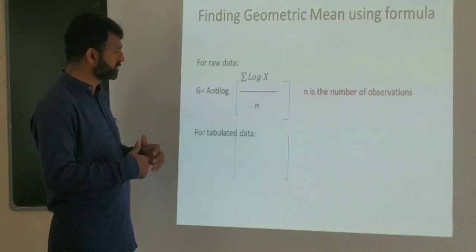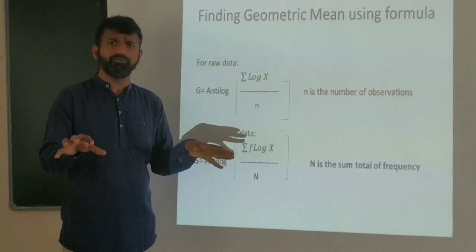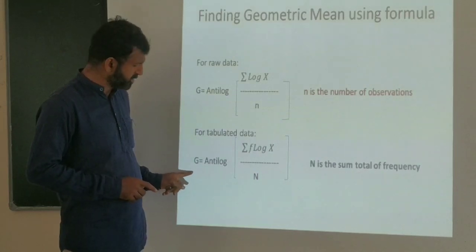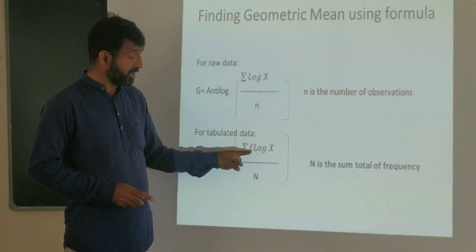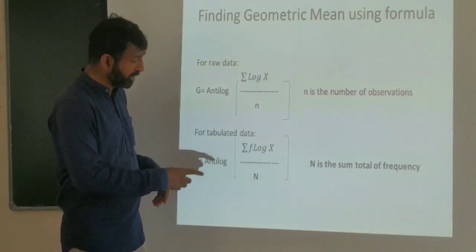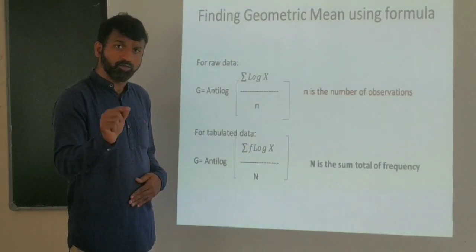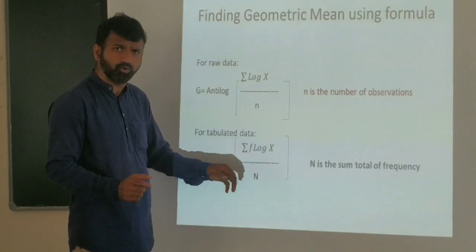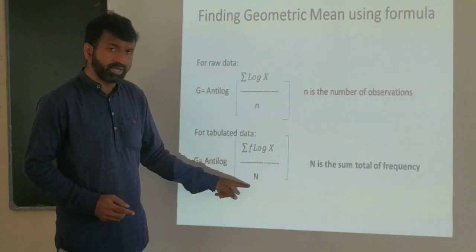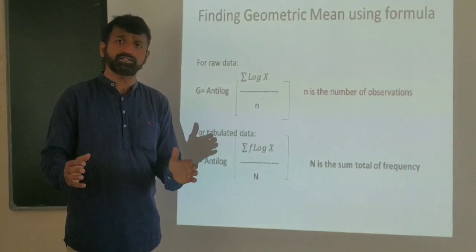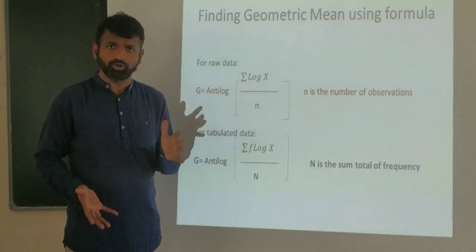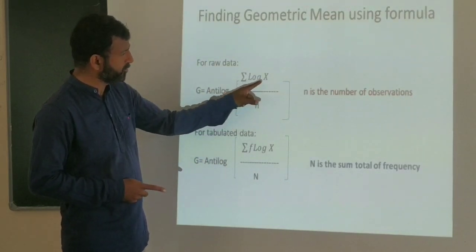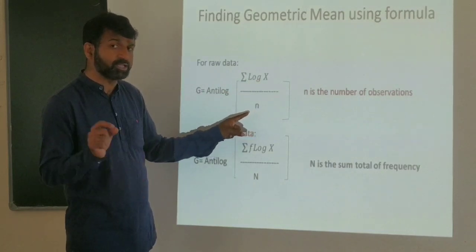For tabular data, there will be frequencies given. The formula is G equals antilog of the sum of f times log X divided by capital N, where f is the frequency corresponding to each X value, and capital N is the total of all frequencies.